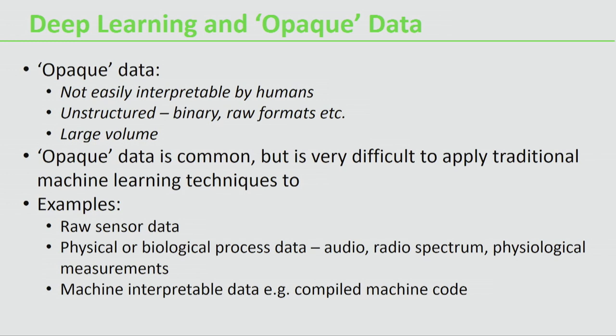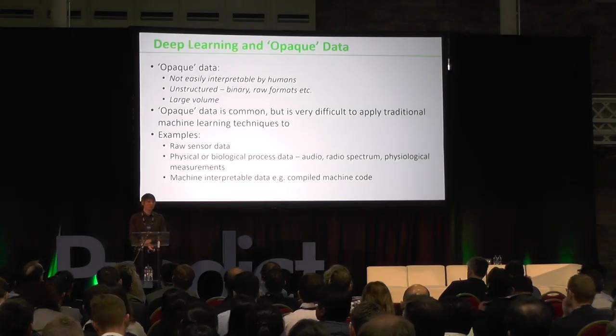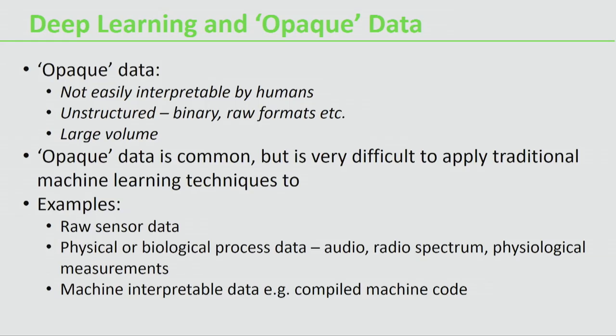We call this kind of difficult-to-understand data 'opaque data.' It's data that's not easily interpretable by humans — it's very unstructured, could be in binary or raw formats, and is very large in volume. For domain experts, understanding this data is highly complex and very difficult. This kind of data is very common, but because traditional machine learning algorithms require human expertise to interpret it, it's very difficult to apply those techniques. Examples include raw sensor data — sensors all around us collecting very raw data — which often has to be rolled up into higher-level interpretations for humans to understand.